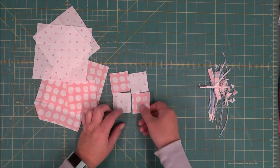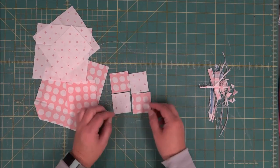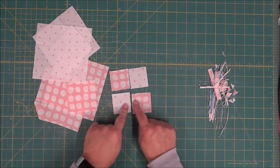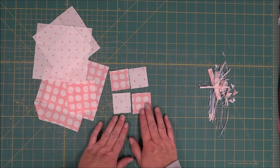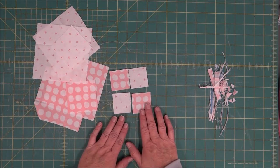So we're just going to make sure that it's laid out in opposites. We're going to sew these two together and sew these two together and then sew both sections together to make our four patch center.